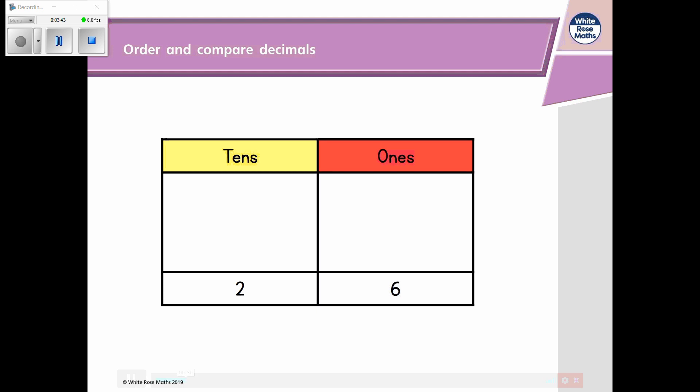Today we're learning how to order and compare decimals. Here's a place value grid showing tens and ones. Because tens have a greater value than ones, any number in the tens column will have a greater value than any number in the ones column. So in the number 26.